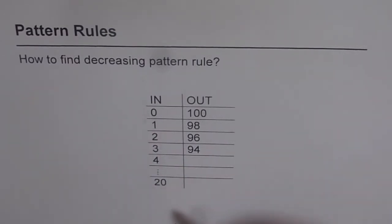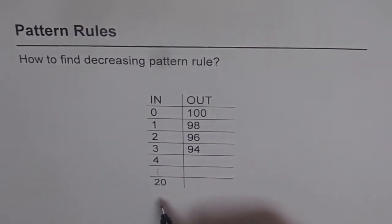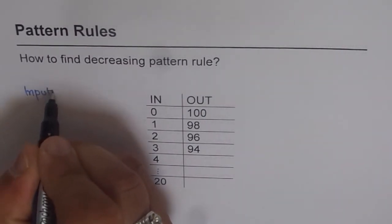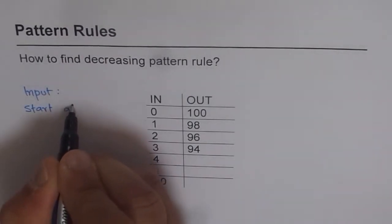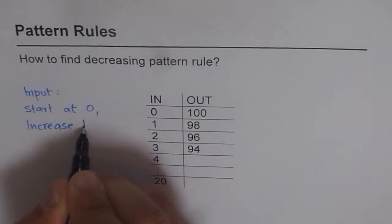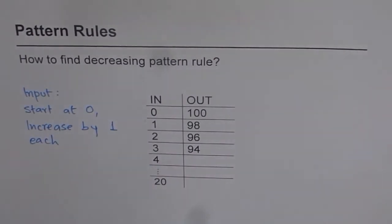For example, let us start with input. Now how will you describe the pattern of inputs? Well we can see input starts at 0 and goes to 1, 2, 3, 4. So it is a whole number increasing by 1. So we can say input pattern starts at the number 0, increase by 1 each time.